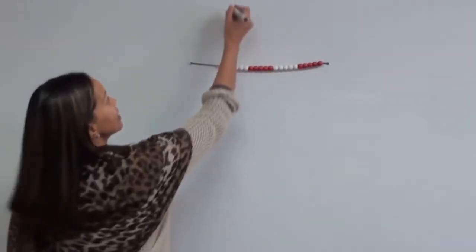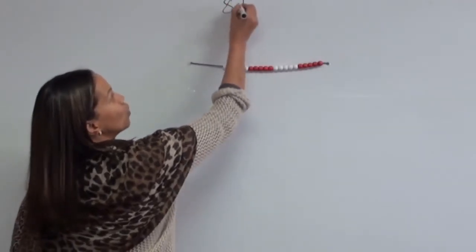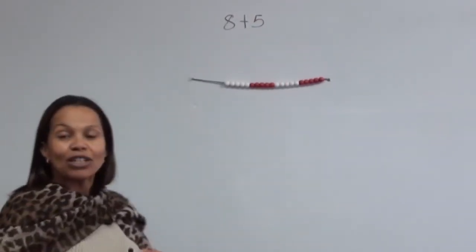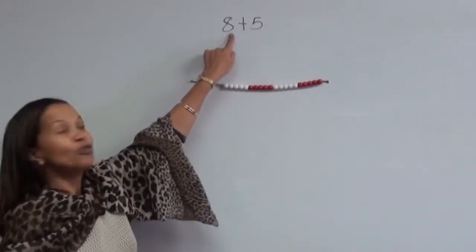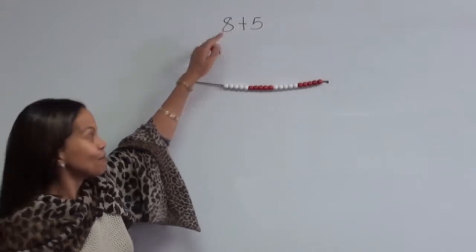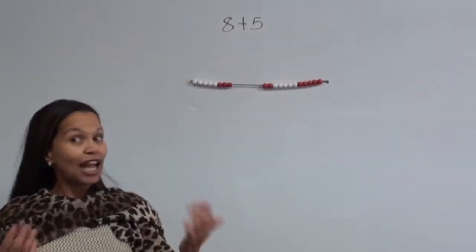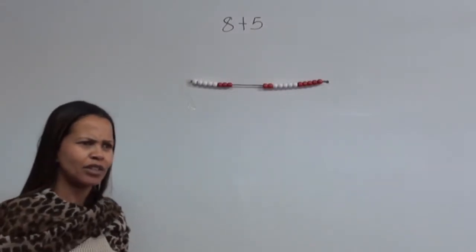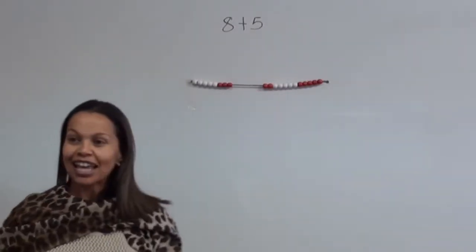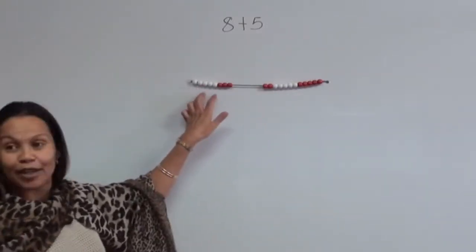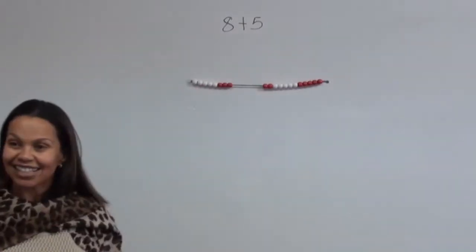This is what I want to work out. I want to add 8 plus 5. So I'm first going to move over my 8 beads. Then I've moved 8 beads over in one go. How did I know that was 8? Correct, because 5 plus 3 makes 8.